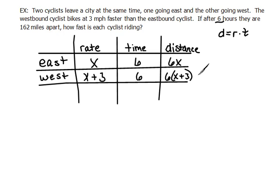It also told us that the total distance they were apart is 162 miles. We can use this to set up our equation because this cyclist's distance plus this cyclist's distance should equal their total distance.